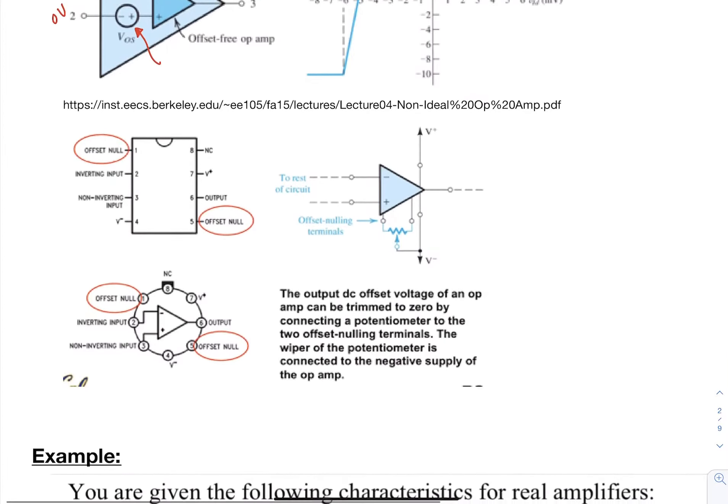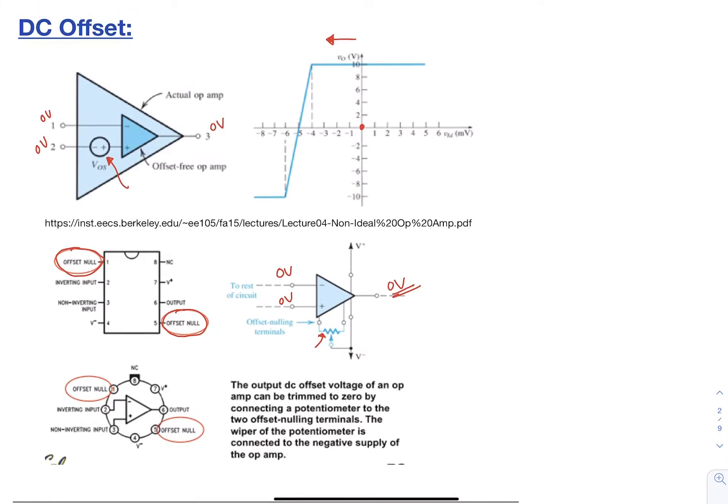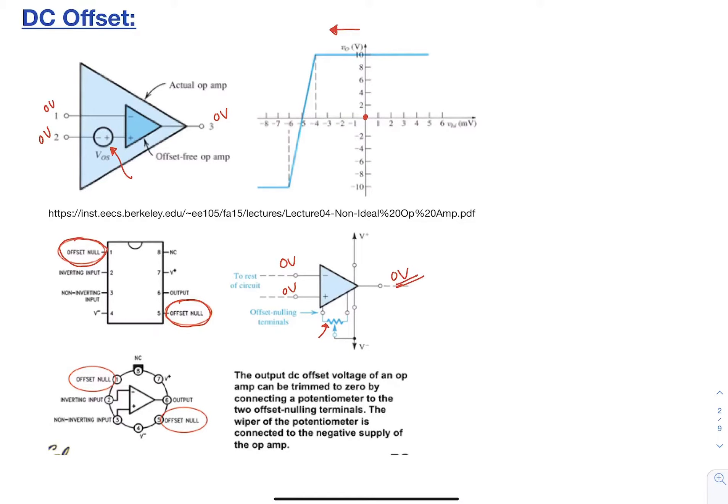How to compensate for that is that on the chip itself you're going to have these offset null options, and so depending on which chip you have, these offsets can be used to trim basically so that when you do have zero volts on both inputs you get zero volts out. So usually put a potentiometer between those and then adjust them to the point where you see zero volts out. So this is the best way to compensate if that is a factor for your design, is to pick an op amp that actually has these offset null internally made.